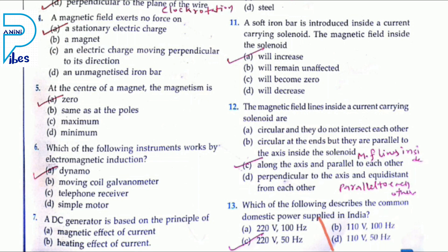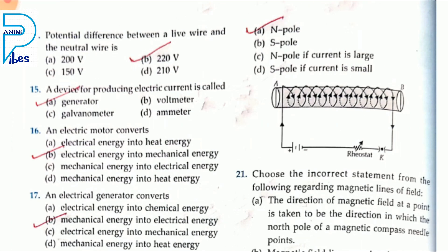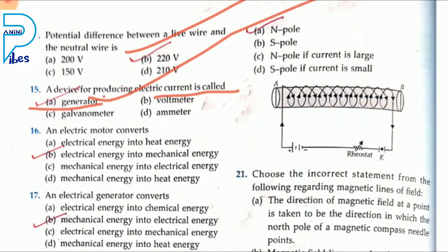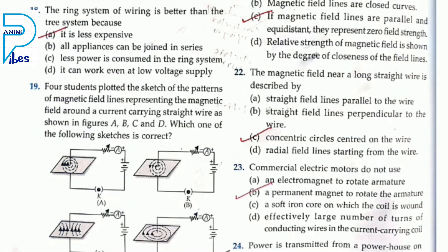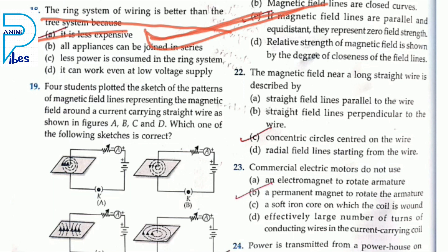In our homes we use 220 volts AC current with a frequency of 50 Hz. The potential difference between live wire and neutral wire is 220 volts. A device for producing electric current is a generator. An electric motor converts electrical energy into mechanical energy; an electric generator converts mechanical energy into electrical energy. The ring system of wiring is better than the tree system because it is less expensive.